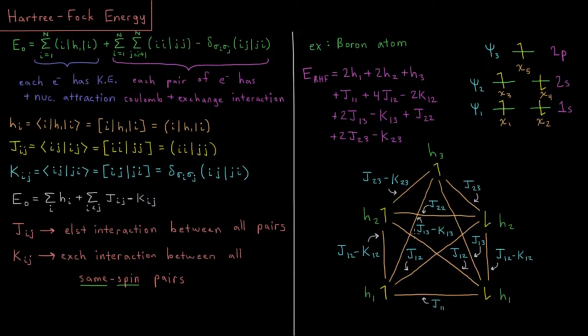And then going across, J12 for each of these pairs, they are opposite spins, so no exchange interaction. For the two electrons in spatial orbital 2, they have just a Coulomb interaction as well.